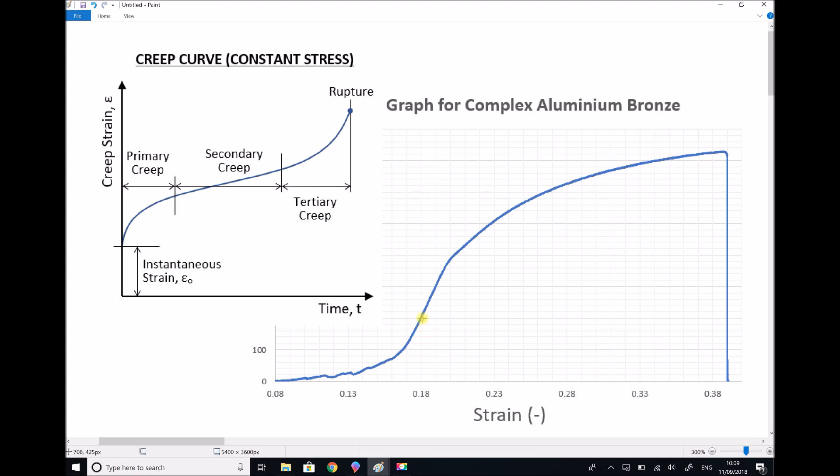And without considering the effect of creep, we might assume that we could hold it at that stress level for years and years without the material elongating any further. And we might also assume that if we were to stress the material to 500 MPa, so somewhere up here, that although the material would plastically deform, it would remain at a strain level of 0.23, regardless of how long we held that piece of material under tension for.